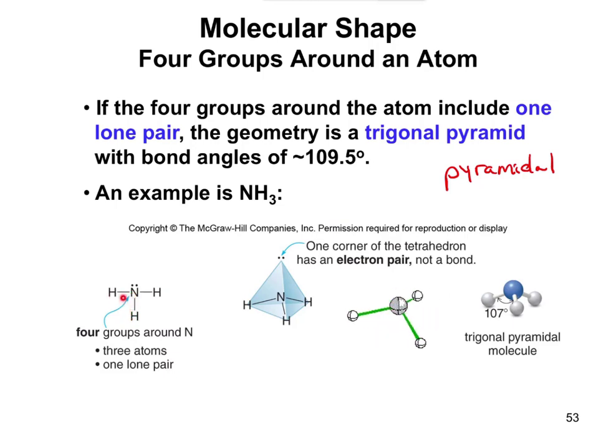If I were to give you a bond angle between that nitrogen, like around hydrogen, nitrogen, hydrogen, say what's that angle, you should be able to pick it out close to 109.5. On a multiple choice test, I would give you like 109.5, 180, 120, and you would pick from them.